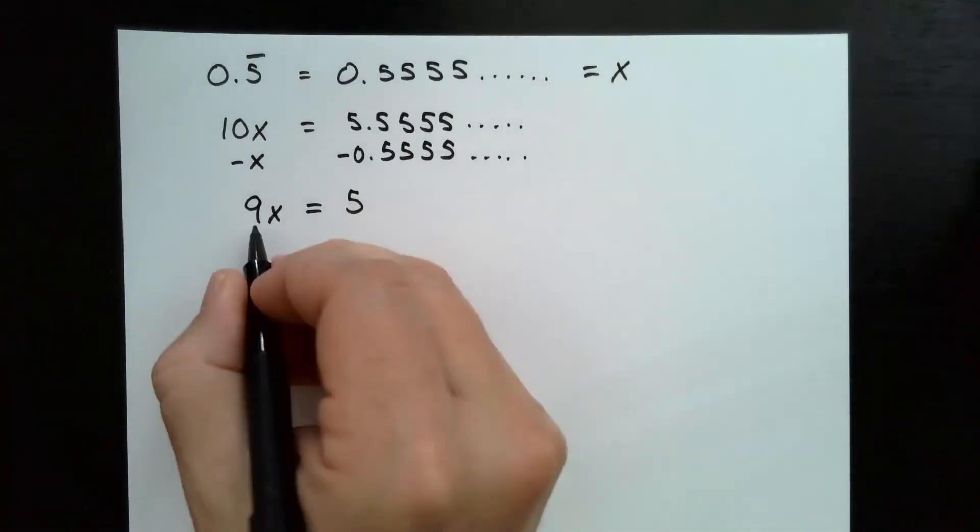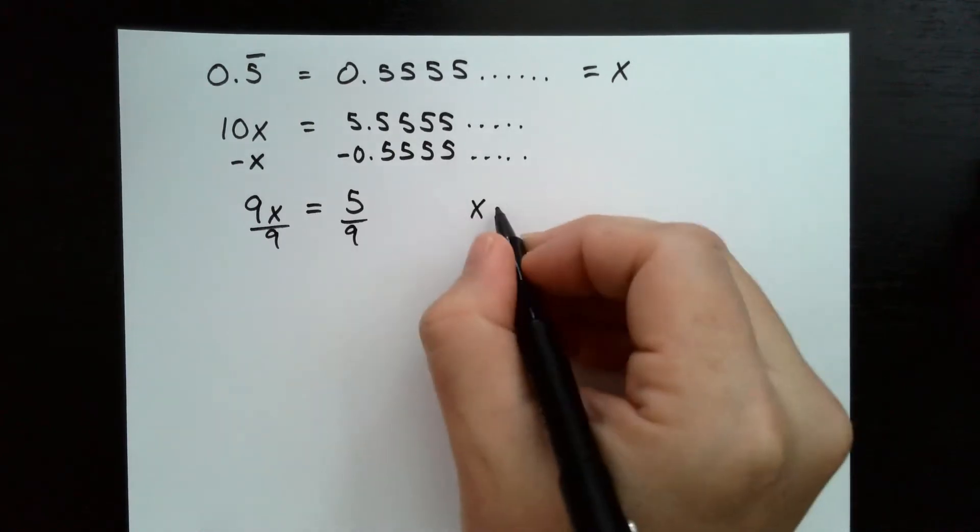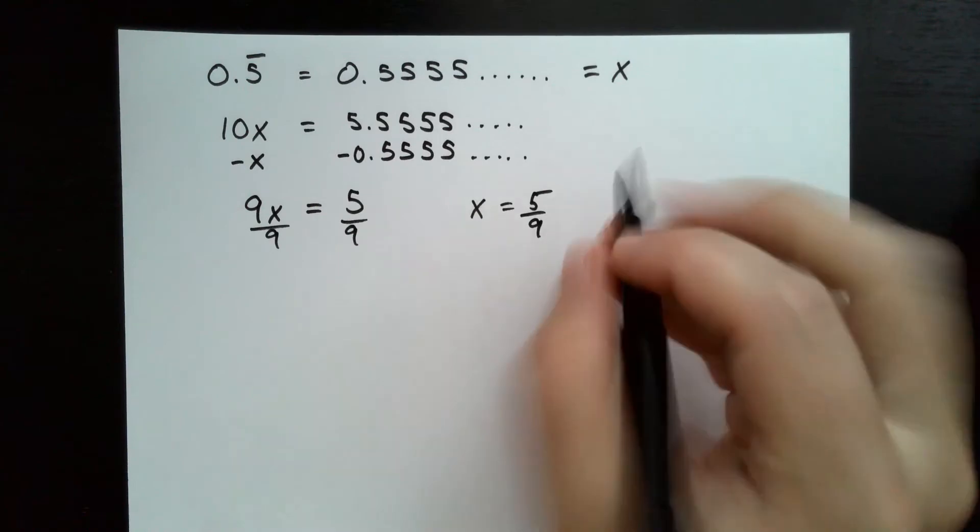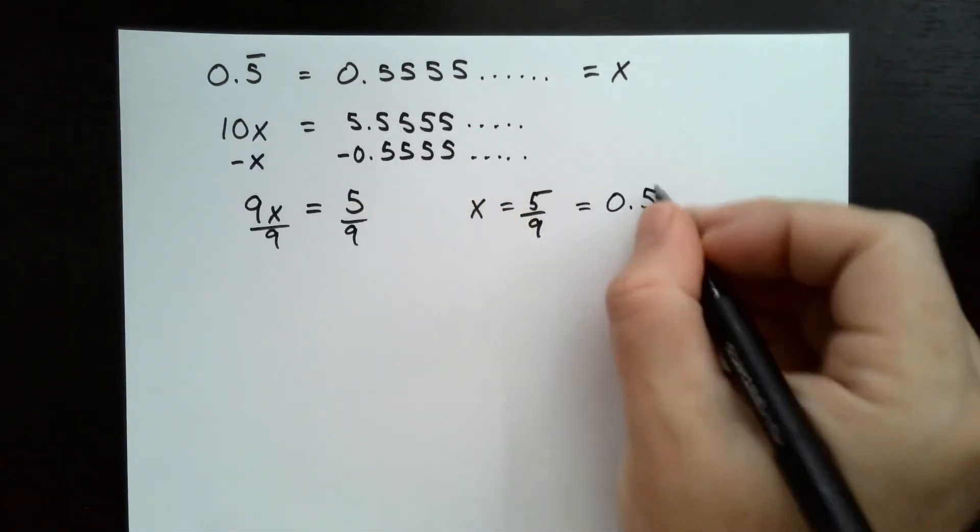So if I solve for x, I divide by 9 on both sides, I get x is equal to 5 over 9, which is equal to this repeating decimal, 0.5 repeating.